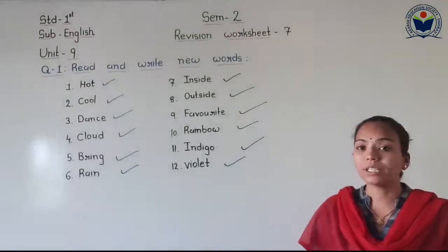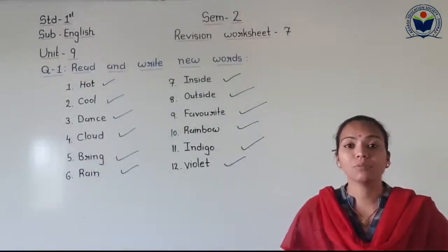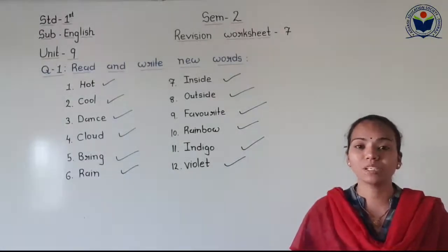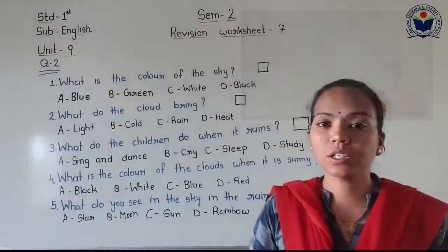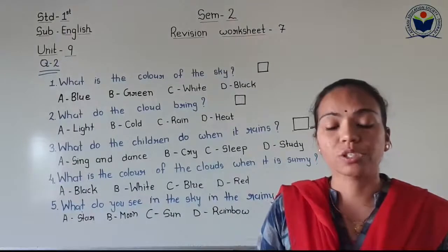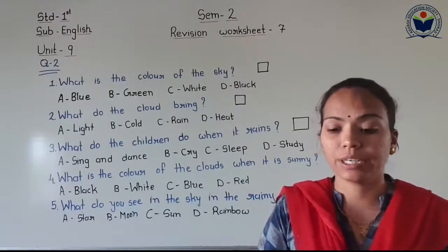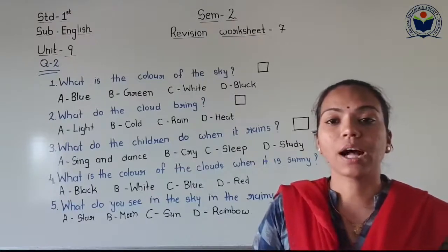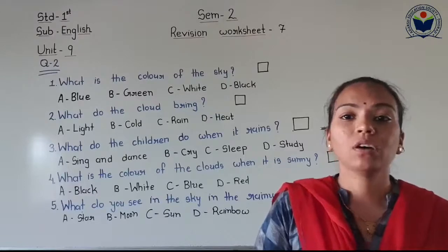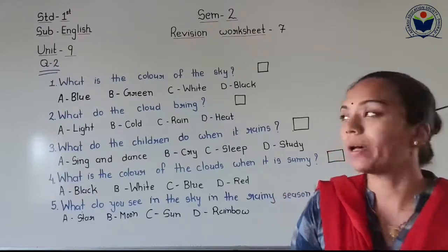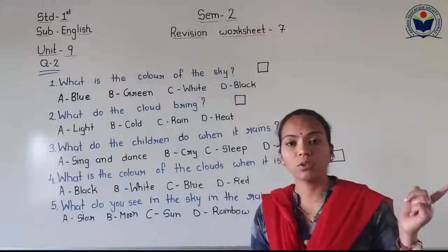After completing reading and writing with good handwriting for Question number 1, it is now time to start Question number 2. Question number 2's heading is 'Write the correct option A, B, C, or D in the box.' So here we have options to choose the correct answers.